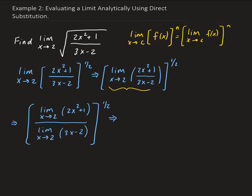From here, we can go ahead and use direct substitution. For the numerator, we evaluate 2x squared plus 1 at x=2, and that's going to give us 9. For the denominator, we have the limit of 3x minus 2 as x approaches 2, so that's going to give us 4. All this is raised to the 1/2, which is the same thing as taking the square root.